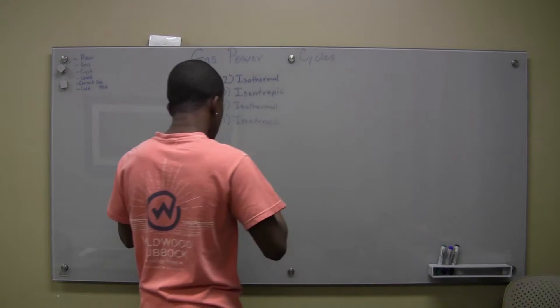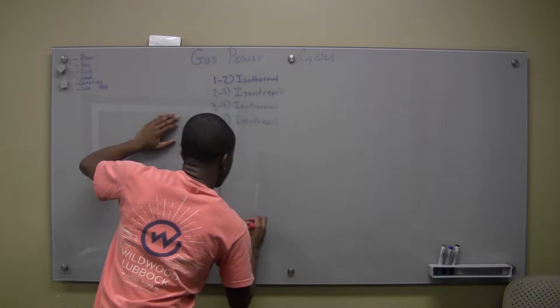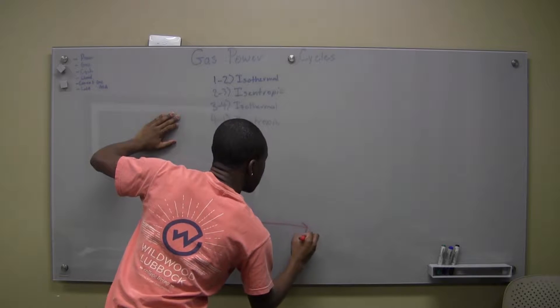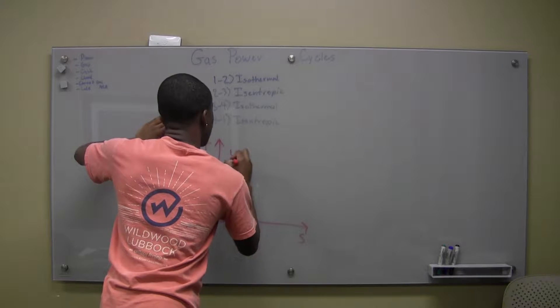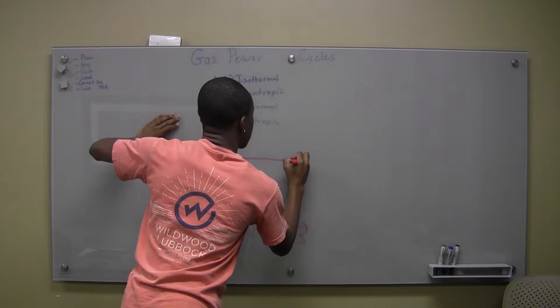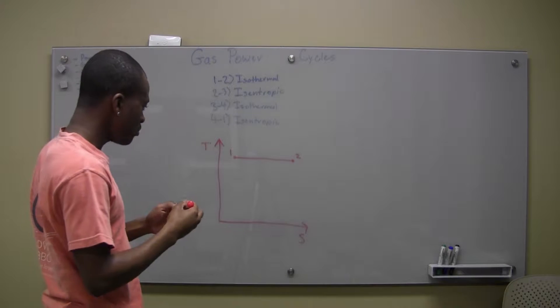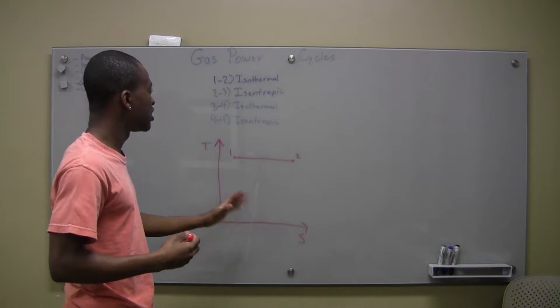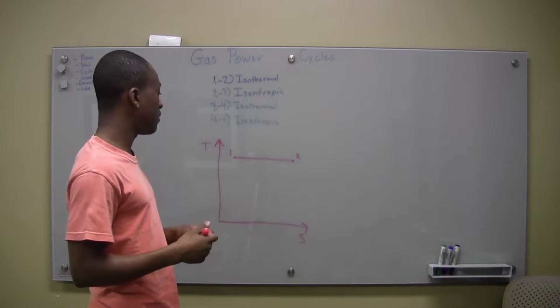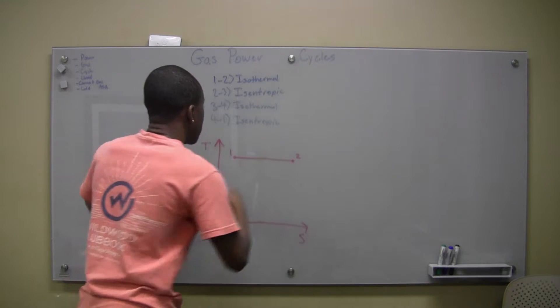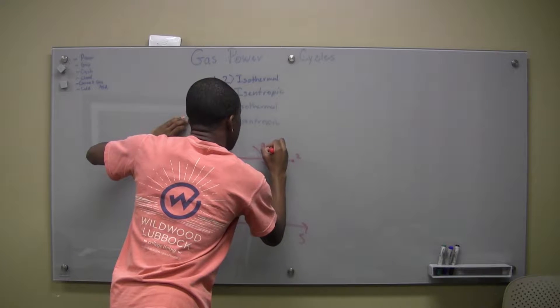So let's say we were to draw this on a TS diagram, this Carnot process. We did something that looks like this. This would be our state one, and let's say we ended up going like this to our state two. And we have a constant temperature, but we're increasing in our entropy. And what we're going to get there is our QH being put in.